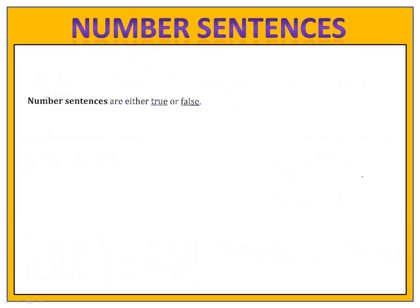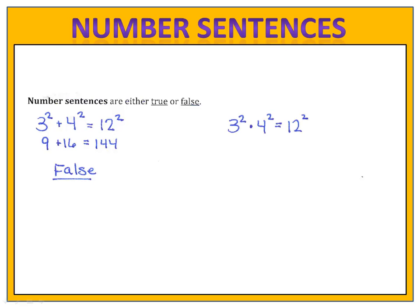Number sentences are either true or false. For example, 3 squared plus 4 squared equals 12 squared — when we evaluate that, we see it's not true: 9 plus 16 is 25, not 144. Another example: 3 squared times 4 squared equals 12 squared. We calculate 9 times 16 is 144, so the second number sentence is true.